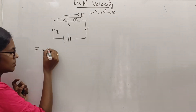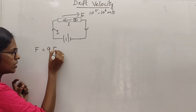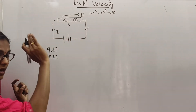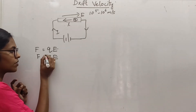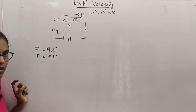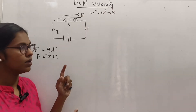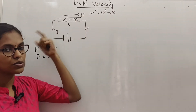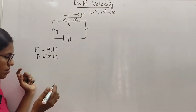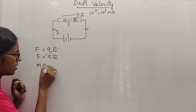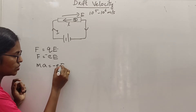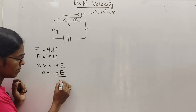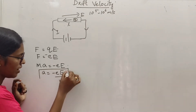The drift force is given by Q into E. F is equal to Q into E. Since the electric field is in the opposite direction and electrons are negative, there is an acceleration. That acceleration is given by: Ma is equal to minus E into E, so acceleration A is equal to minus E divided by M.